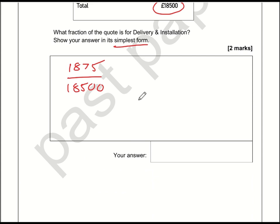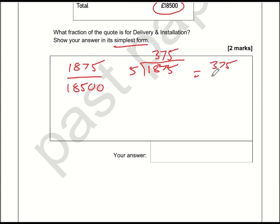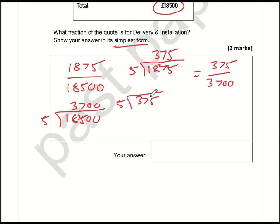Unfortunately, that fraction is not in its simplest form. The most obvious number to divide both by is 5. 1,875 divided by 5: fives into 18 go 3 remainder 3, 37 divided by 5 is 7 remainder 2, 25 divided by 5 is 5 — giving 375. 18,500 divided by 5: fives into 18 go 3 remainder 3, 35 divided by 5 is 7, then two zeros — giving 3,700. Dividing by 5 again: 375 divided by 5 gives 75, and 3,700 divided by 5 gives 740. So we have 75 over 740.